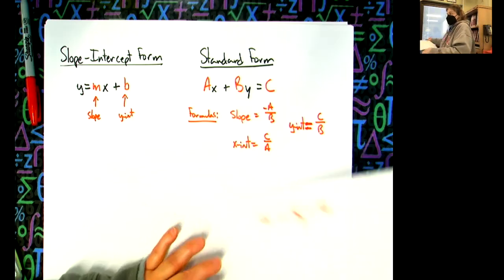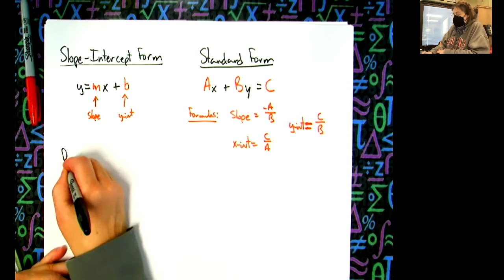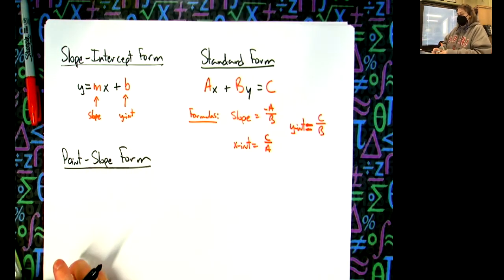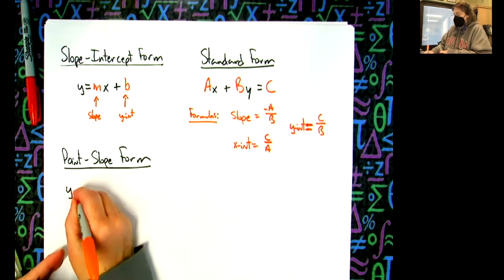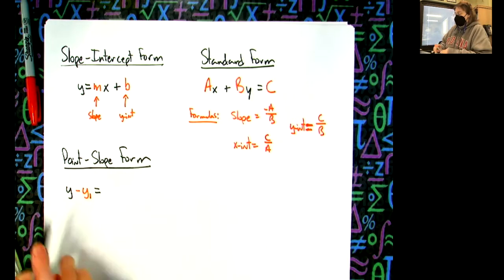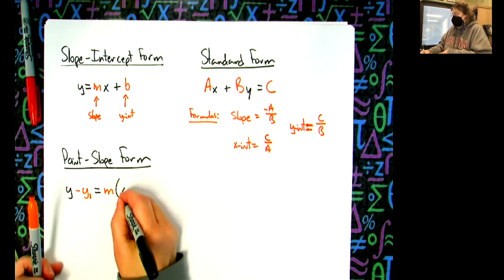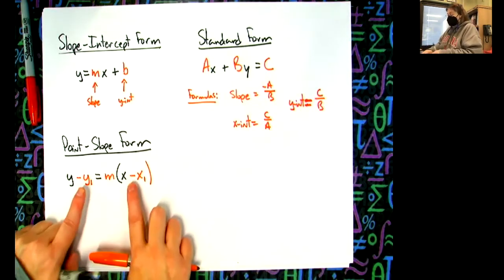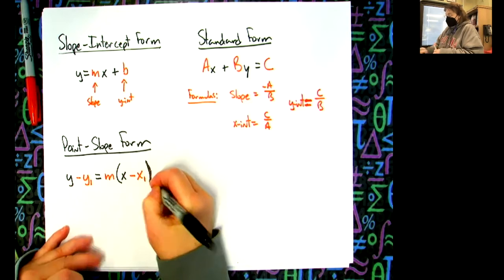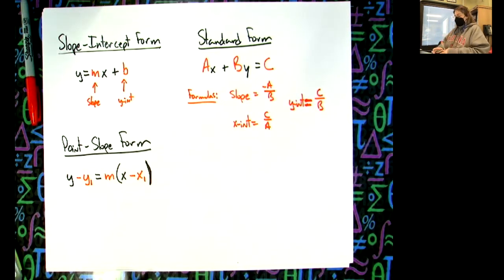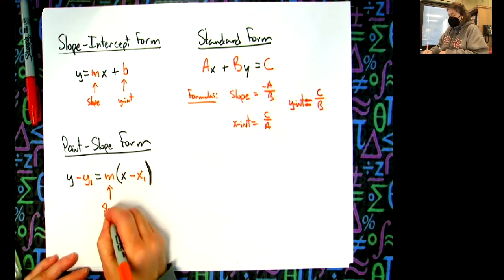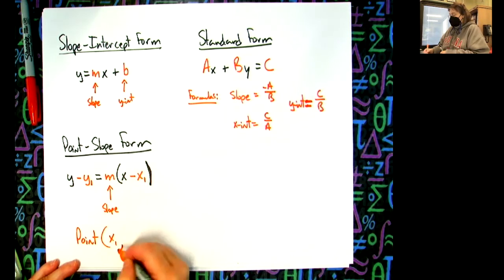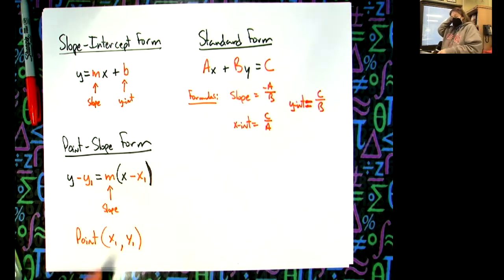All right, point-slope form. It involves a point and a slope: y minus y-sub-one equals m times x minus x-sub-one. We've already talked about what the negatives in the formula mean — it means you pull out the opposite number. So m is slope, x-sub-one is the x-coordinate of the point on the line, and y-sub-one is the y-coordinate. It has a slope and a point that you can identify really quickly.